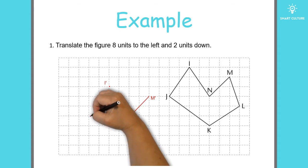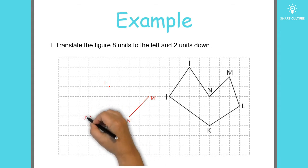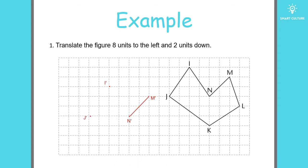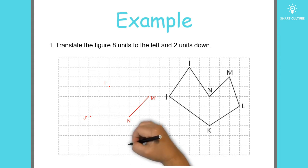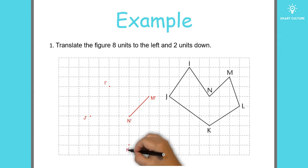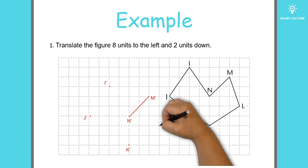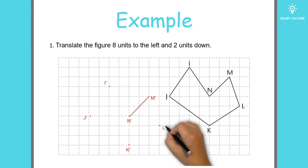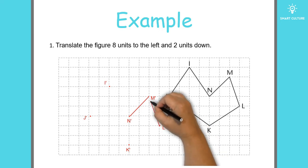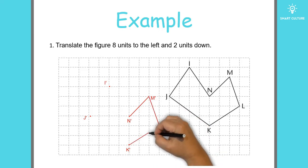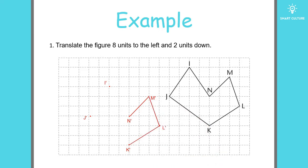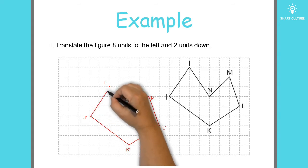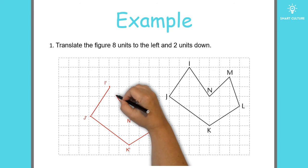J: eight units to the left and two units down. K: eight units to the left and two units down. Lastly, L: eight units to the left and two units down. The next step is to connect all these points. You'll notice that these two figures are congruent.